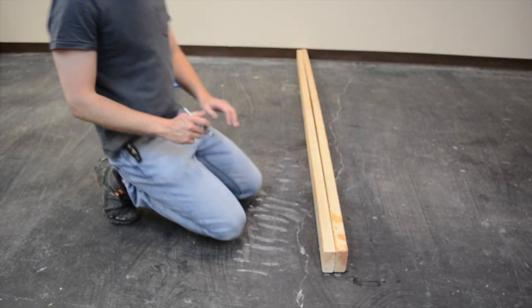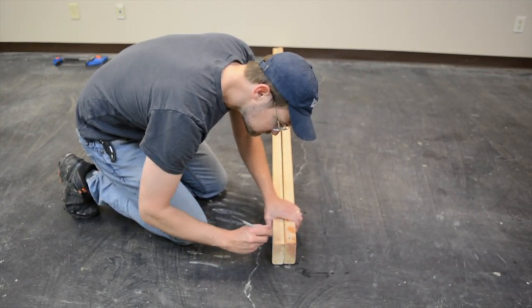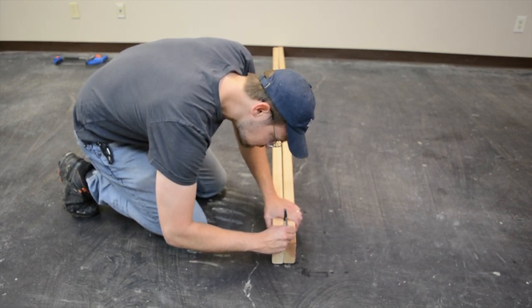First, we're going to lay the 2x4x8 vertical frame legs on the floor and write vertical frame legs on them, and then we're going to write bottom on the ends of each, so we always measure from that same side.